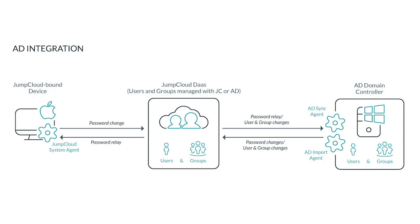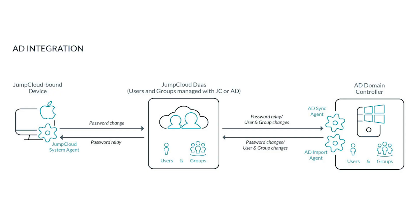The second feature is ADSync. What this does is complete a round-trip exercise enabling users of JumpCloud — for example, Mac users — to change their passwords on those hosts and write that information back into Active Directory very securely.